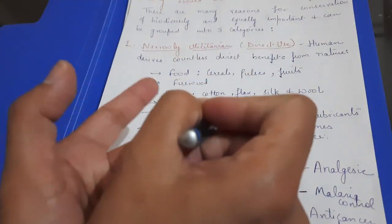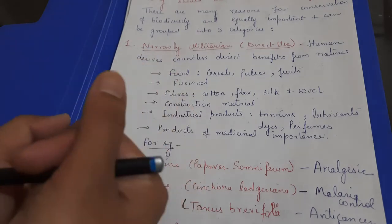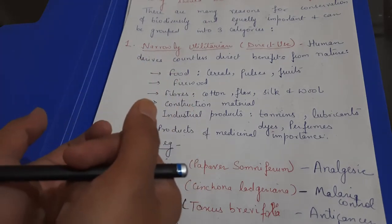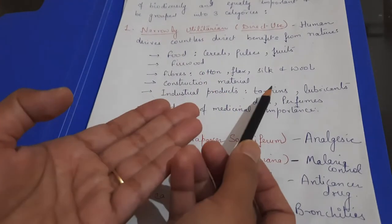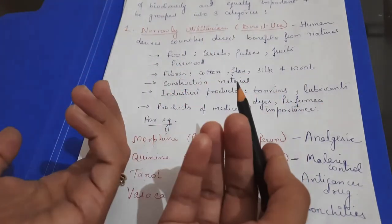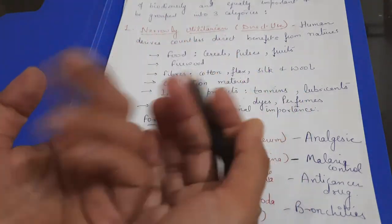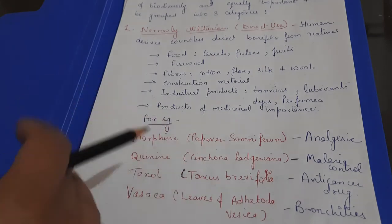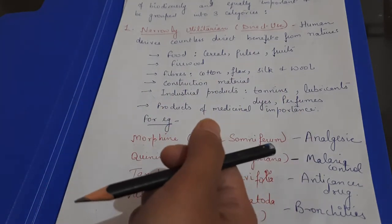What do we need to conserve? Because we want to use these things. Construction material, industrial products, tannins, lubricants, dyes, perfumes, where do you get this? Nature, living organisms, plants, animals. Plants have made medicines.